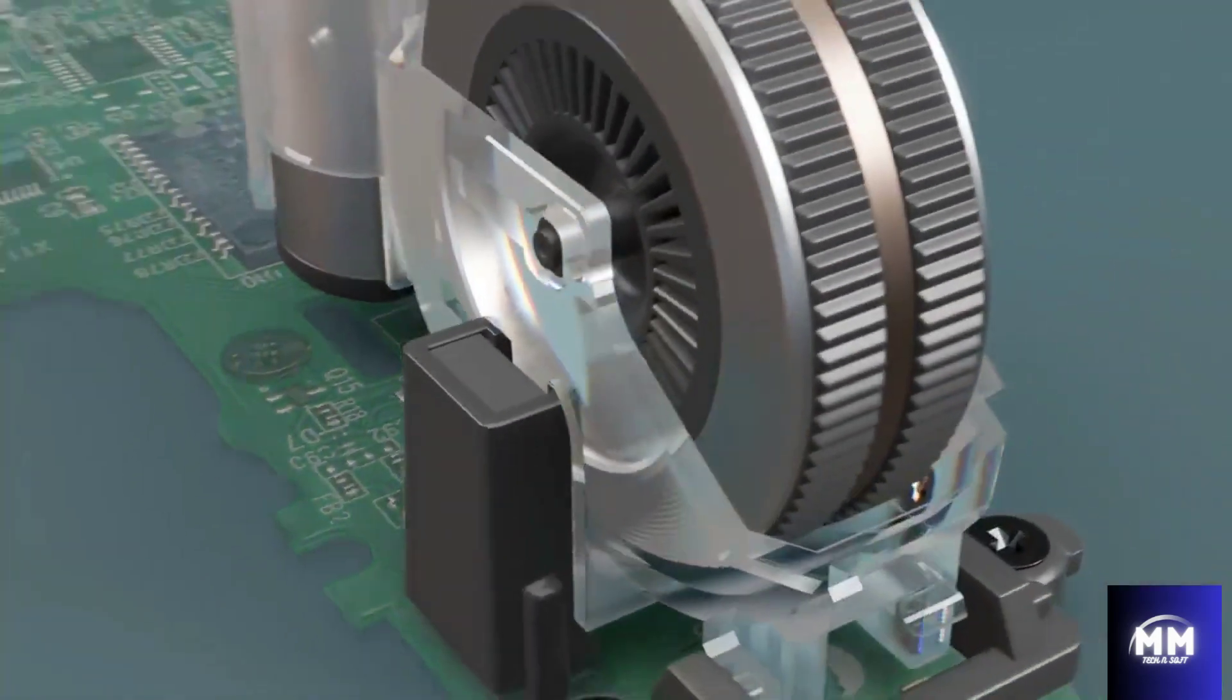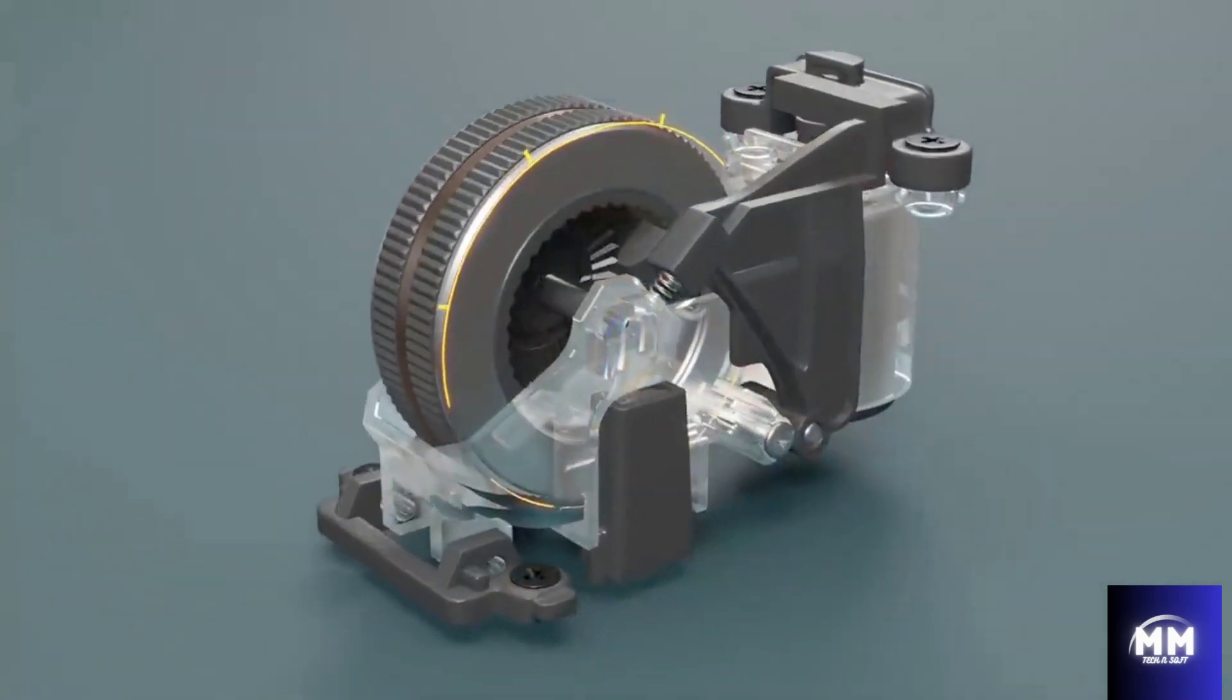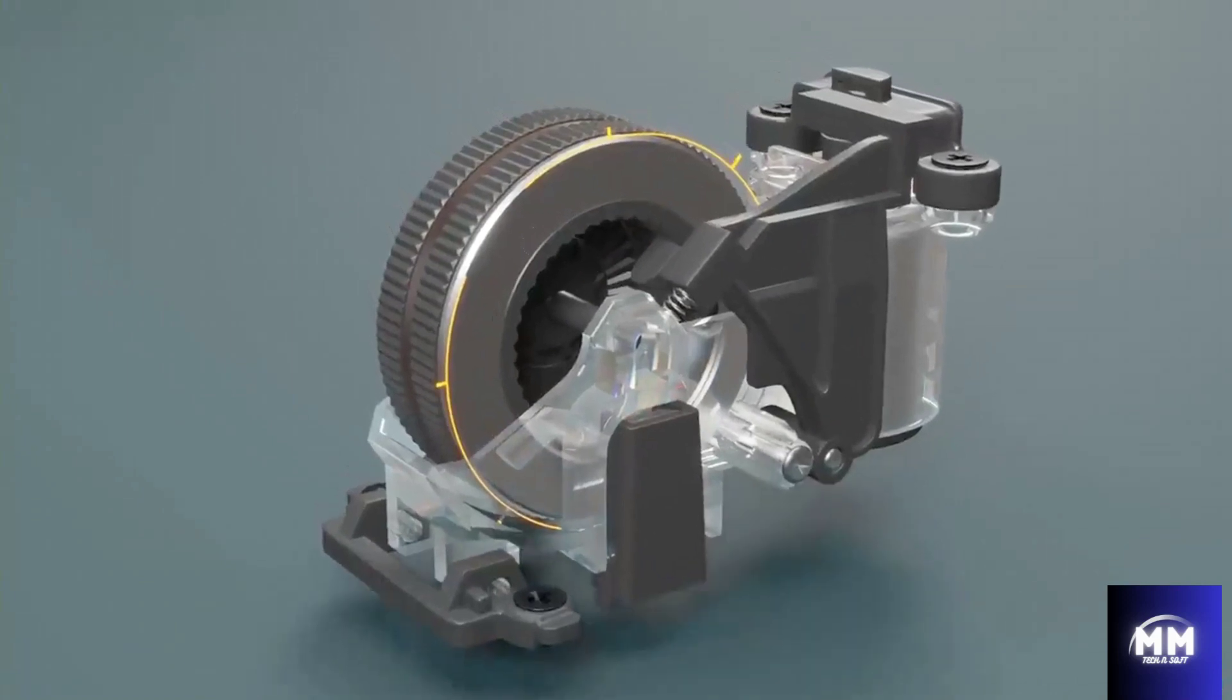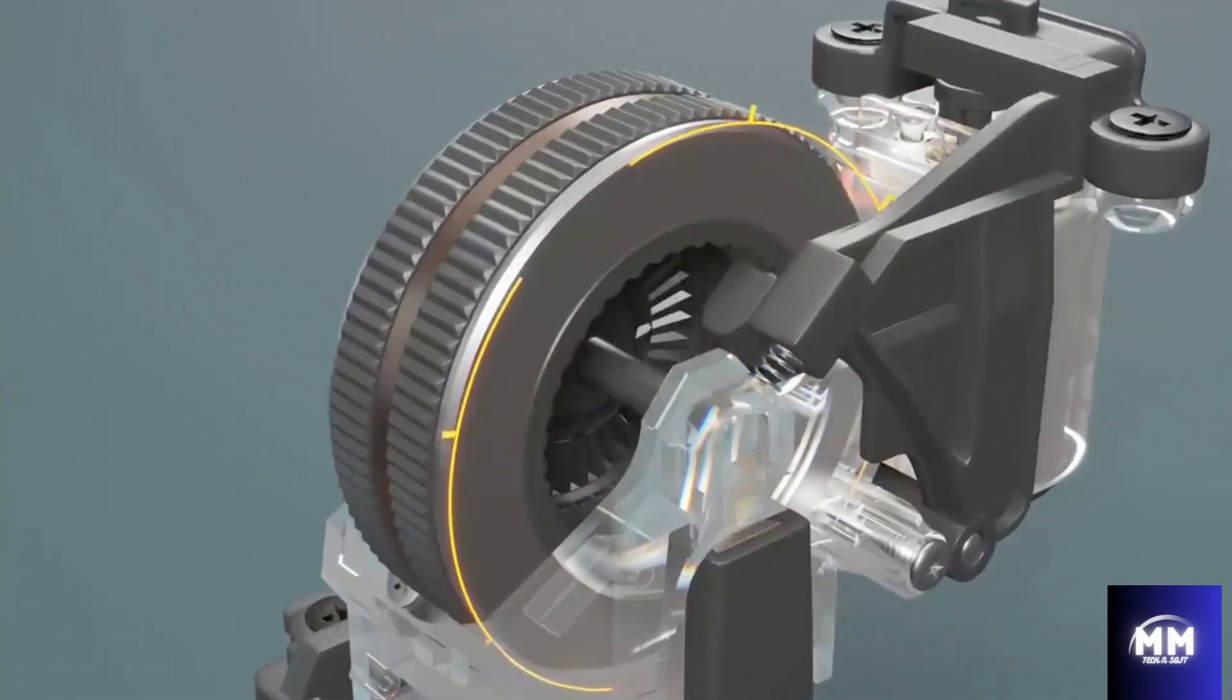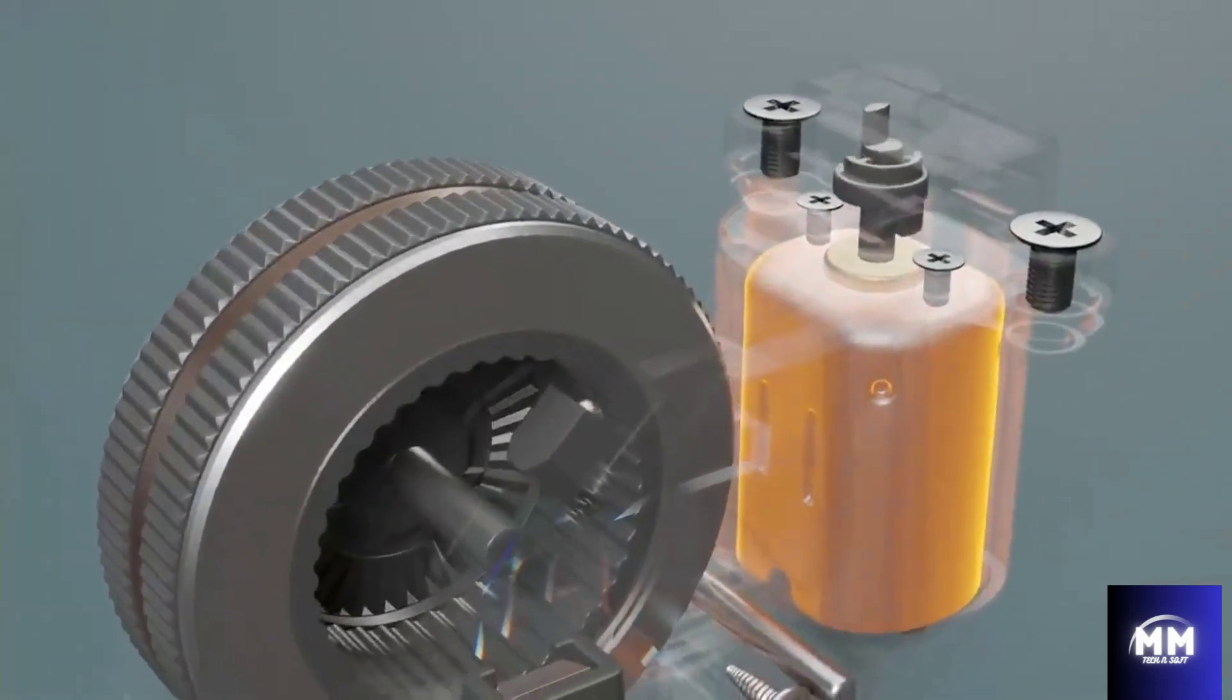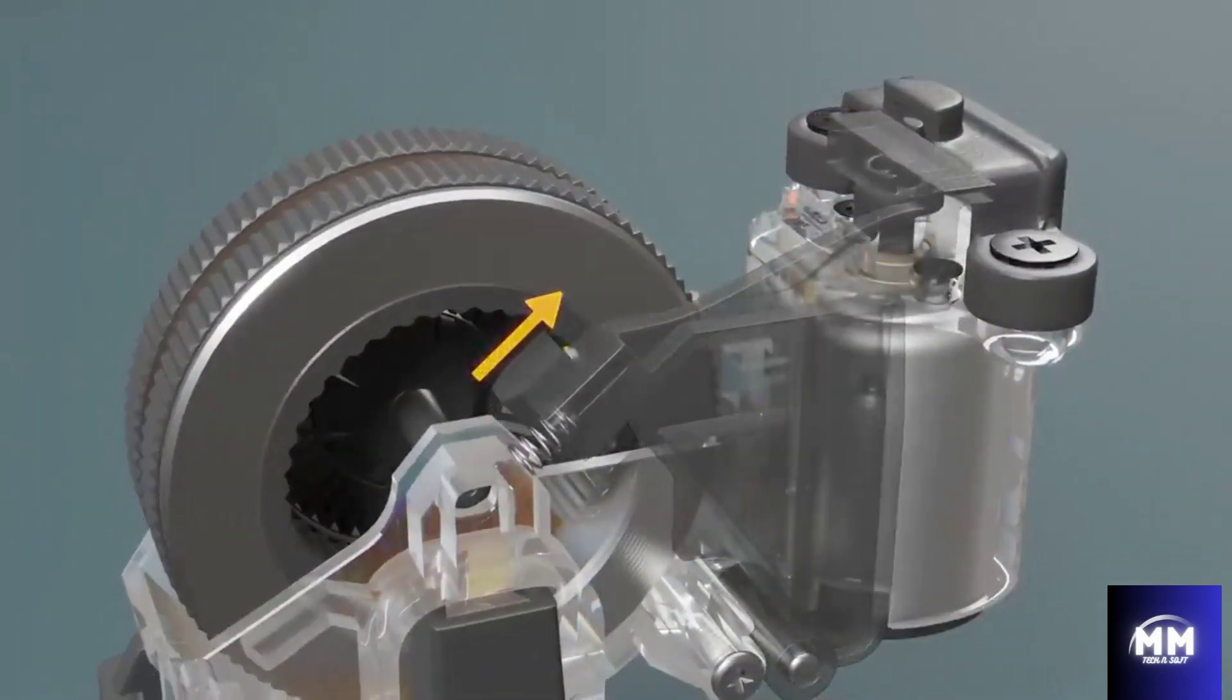Most scroll wheels have some type of mechanism to create the clicking-like motion and sound as the scroll wheel rotates. A common way this is done is to have a ring of ridges, a spring, and a small plastic follower that rides along the ridges. When this button is pressed, the motor turns and rotates to engage the follower so that it presses against the ridges.